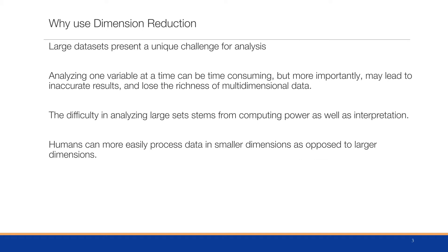In this module we're going to be discussing principal component analysis. Principal component analysis is a way for us to reduce the number of dimensions of a given data set. The reason we want to do that is because it's a lot easier for us to work with a smaller number of dimensions — or variables — than it is with larger ones, like taking a 40-column data set and reducing it into 2 or 3 easily understood dimensions.